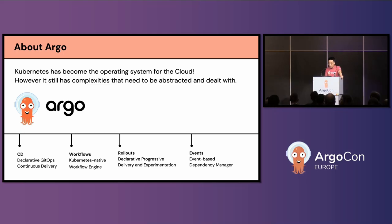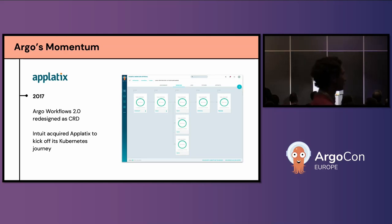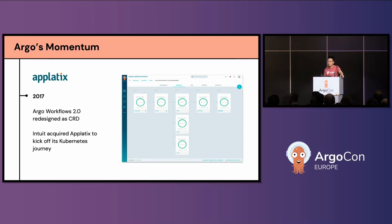Let's look back at the history. Everything started at a company called Applatix. We built an end-to-end DevOps platform on top of Kubernetes before the custom resource definition era — basically CRDs weren't there yet. That was Argo Workflow 1.0. If you're curious, go to the Argo Workflow repository and switch to the 1.0 branch. Later we were able to redesign and rework the core engine based on CRD, and the system became Argo Workflow 2.0.